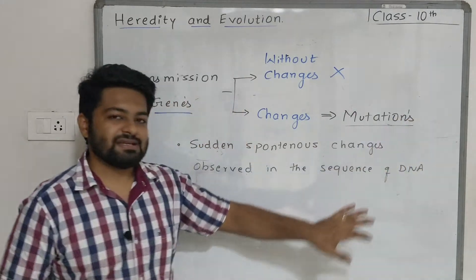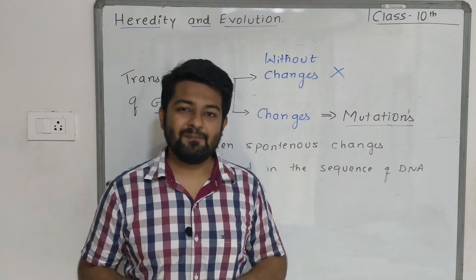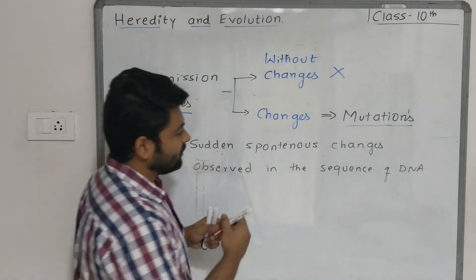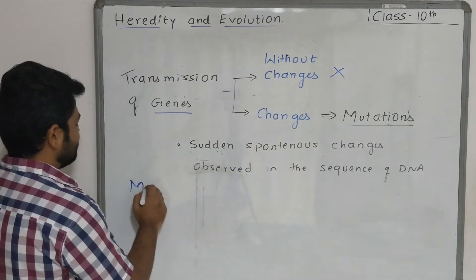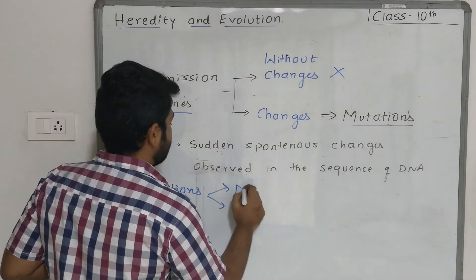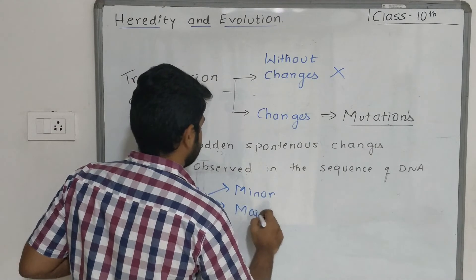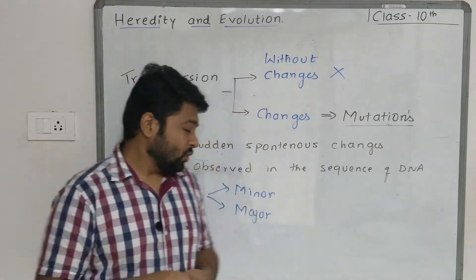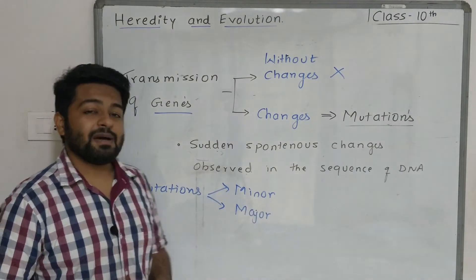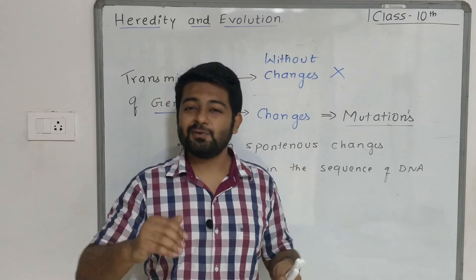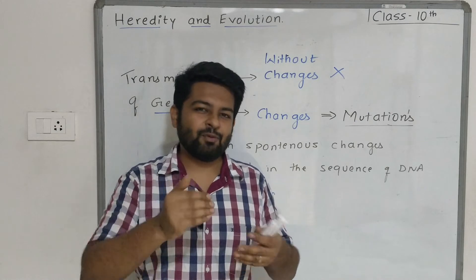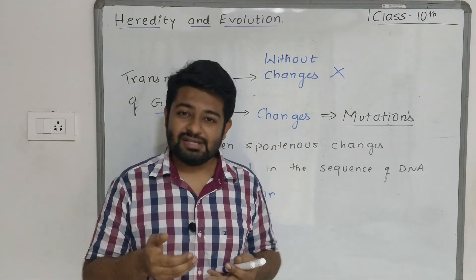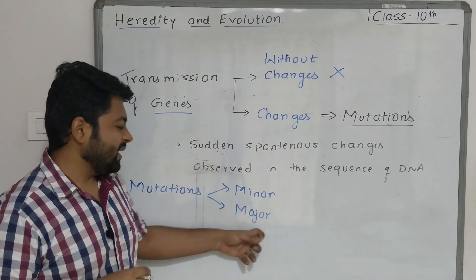Due to mutations, the characters passed on can be very different from those of the parents. Mutations can be divided into two types: minor and major. When changes occur in selected sequences — one, two, or three sequences — those are minor mutations. In major mutations, a larger region undergoes change: sometimes a small region is deleted, sometimes the sequence is inverted, which is called inversion. These different phenomena cause extensive changes in the gene, which we call major mutations.